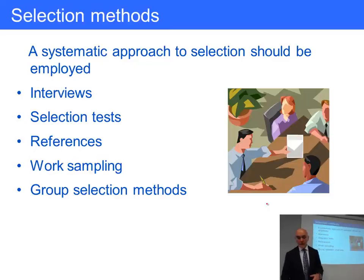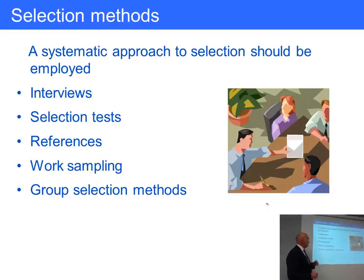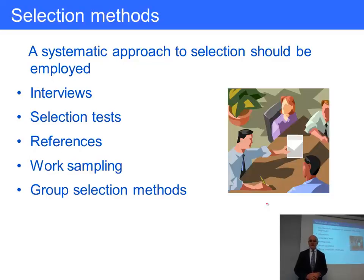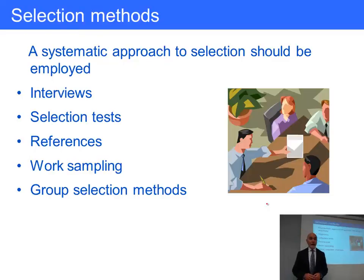Assessors look at who works well in a team, who has problem-solving ability, how people deal with objections to their ideas, and how persuasive they are. However, group selection methods are expensive and tend to be used for higher-level recruitment — such as management trainee schemes — where it's very important to get it right and the company will invest heavily in these people.